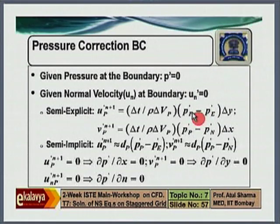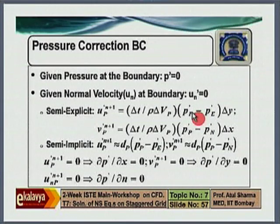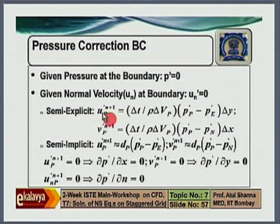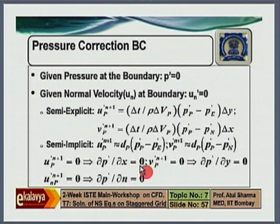In most solid boundaries — in fact all solid boundaries — there is one boundary condition which even comes from inviscid flow. No-slip boundary condition comes from viscous flow, but even in inviscid flow, normal velocity is equal to zero. So at a solid boundary, normal velocity correction is equal to zero. If you go back and look into the expression for velocity corrections, if the normal velocity correction is equal to zero, what you will get is that the normal gradient of pressure correction should be zero. So at solid boundaries, the normal gradient of pressure correction is taken as zero as a boundary condition.